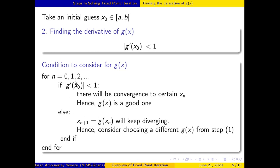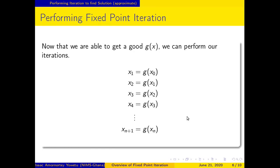If this condition fails, then g(xₙ) will keep diverging, and there is a need to reconsider and choose a different g(x) from f(x). Once we have a good g(x), we proceed with the iterative process. We plug x₀ into g(x) to get x1, plug x1 to get x2, and continue this iterative process until we obtain the convergent value xₙ₊₁.